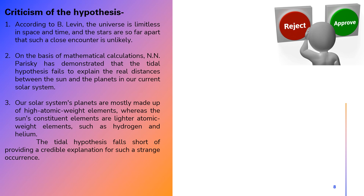Now let us see the criticisms of this hypothesis. The first criticism is that the universe is so limitless that it is highly unlikely for two stars to come so close to each other. The second criticism is that the real distances between the sun and the planets do not support the tidal hypothesis according to mathematical calculations.